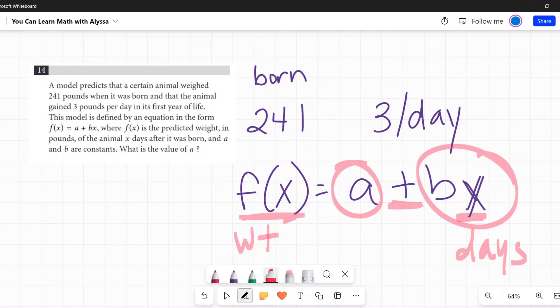And then adding to it a second number, and that number is going to change because as the number of days changes, like if this was b times 10 days, b times 15 days, b times 18 days, then this number b times x is going to get bigger. So what's getting bigger with this animal? It's gaining weight and it's gaining three pounds every day.